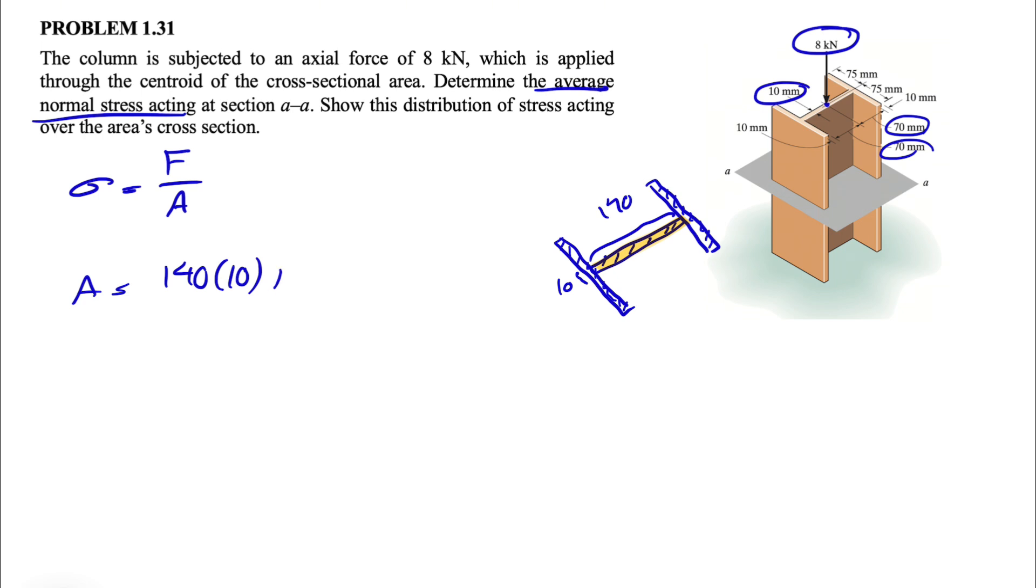And we also have the area of these two cross sections that I'm highlighting in red. So plus two times the thickness, this little part here is 10 millimeters. So 10 times the length of what we have here, which if you look at the question, we see that it's 75 plus 75 or 150. So times 150.